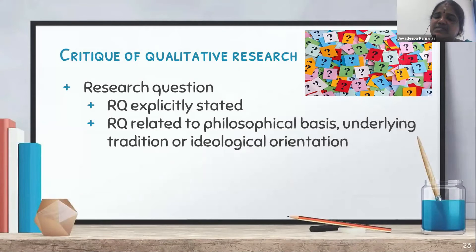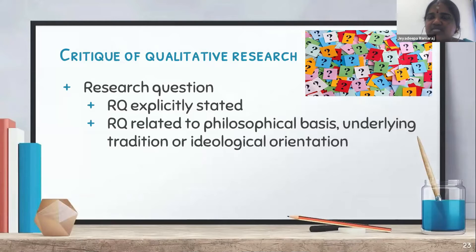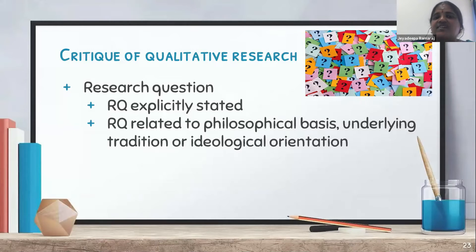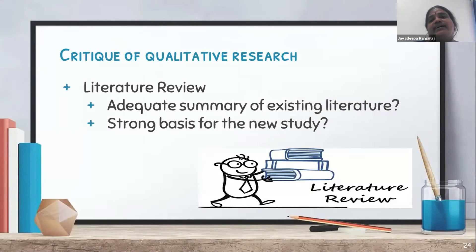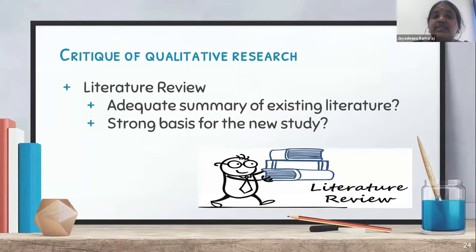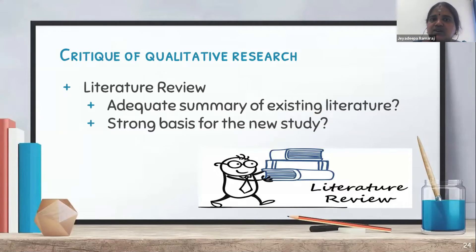Then comes the research question in the qualitative approach — whether it is explicitly and clearly stated, and whether it is related to the philosophical basis, underlying tradition, or ideological orientation. Then comes the literature review — whether an adequate summary of existing literature is taken. In a qualitative approach, literature support is very important, and whether it gives a strong basis for a new study must be justified.